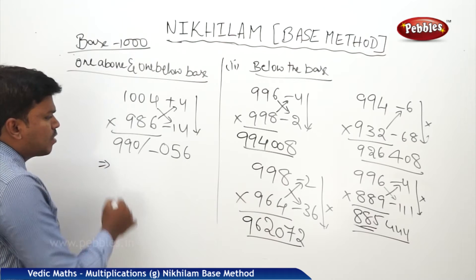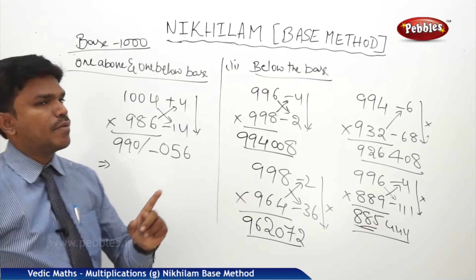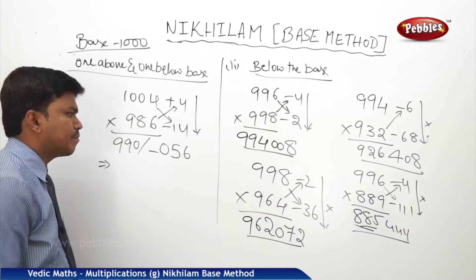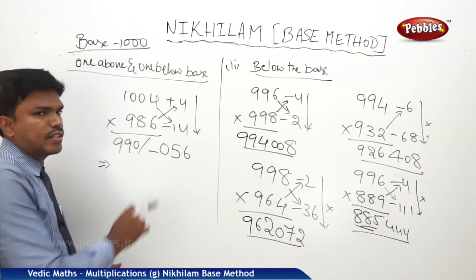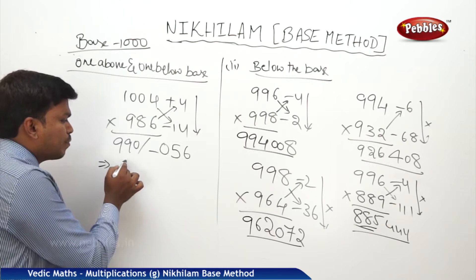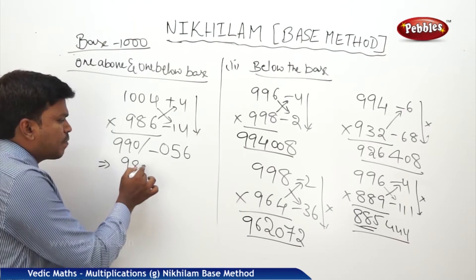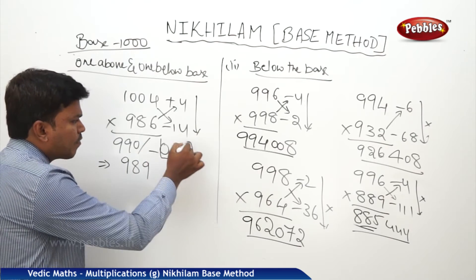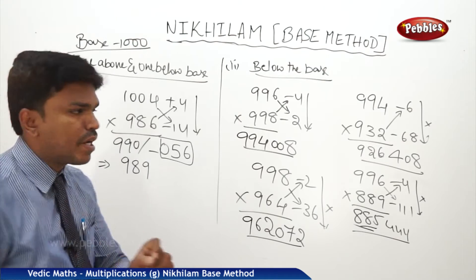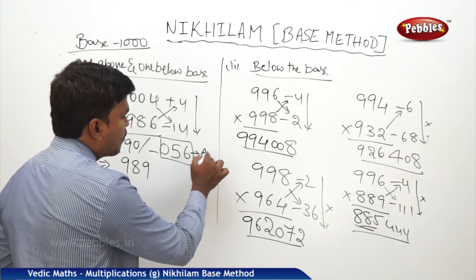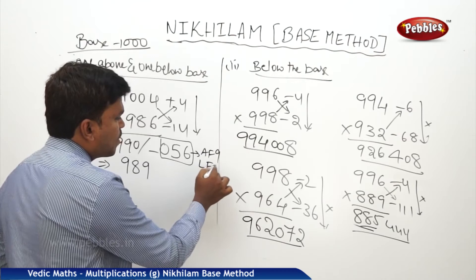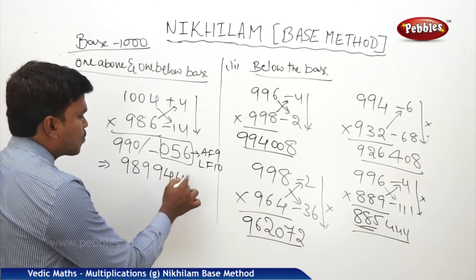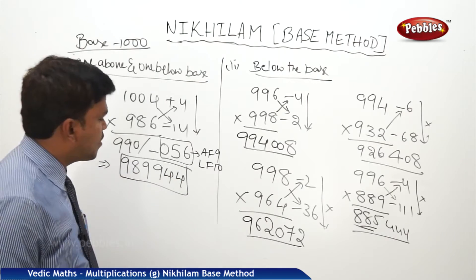Now, you tell me how to go for the next step. There is a minus here, so first of all the left side part should be reduced by 1. Since there is a minus symbol it becomes 989. To get the right side part, apply 'all from 9, last from 10' to the number 056, giving 944. So my answer is 989, 944.